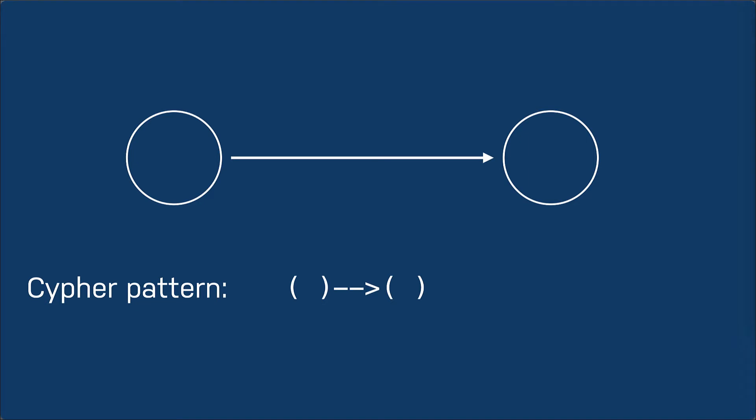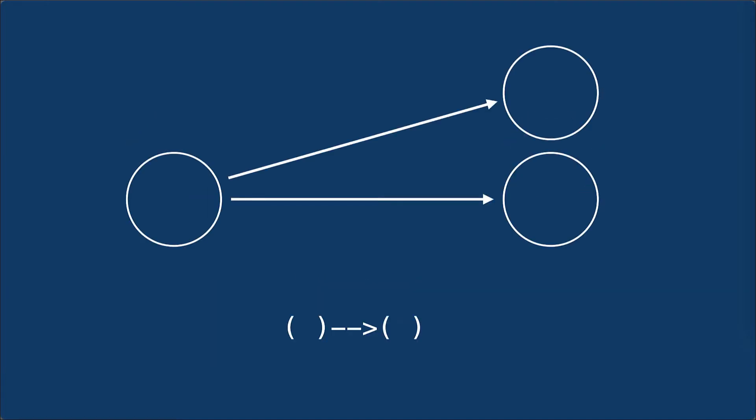Here is a Cypher pattern. In Cypher, nodes are represented in parentheses and the dash arrow represents the directed relationship between nodes. What this Cypher pattern represents is all nodes in the graph that have a relationship to other nodes in the graph. For example, this node has relationships to two other nodes in the graph.